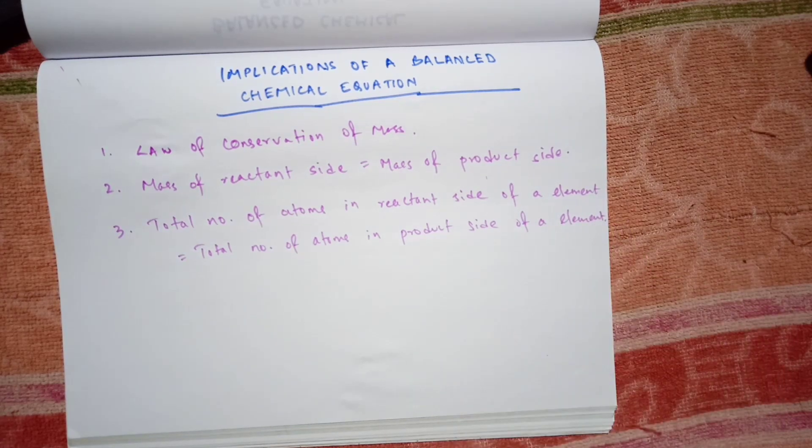These are the three conditions that you have to satisfy before balancing a chemical equation. If you know all these three points, then it will be easy for you to balance a chemical equation.